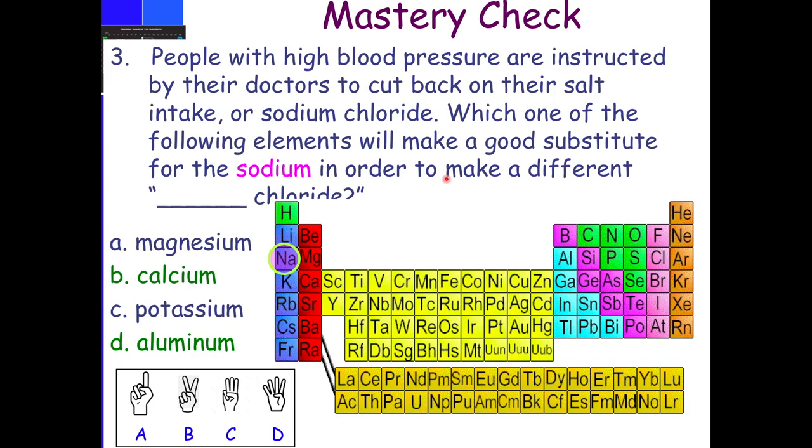People with high blood pressure are instructed by their doctors to cut back on their salt intake or sodium chloride. Which of the following elements will make a good substitute for the sodium in order to make a different blank chloride? A, magnesium. B, calcium. C, potassium. D, aluminum.